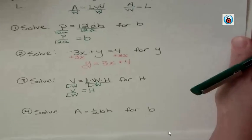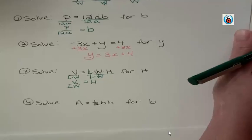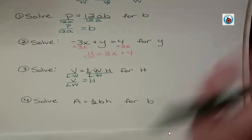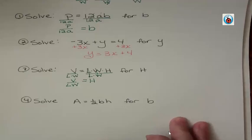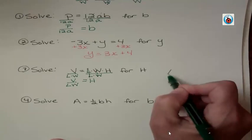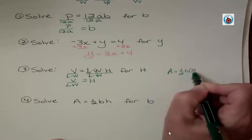Final one. Solve area equals 1 half BH for B. This is a little harder because it's got a fraction in it. You know, there was a video I did that I couldn't remember the shape. It was crazy. There was a formula of this.